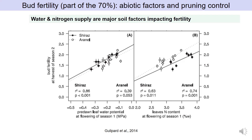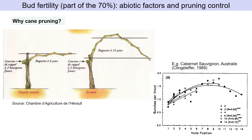What we call latent bud fertility is the number of primordia of inflorescences that will be differentiated within the latent bud. So why cane pruning? Cane pruning is used for varieties such as Ugni Blanc, for example, for which the basal latent buds — the bottom buds on the cane — are not fertile or are less fertile. You need to increase the number of buds per vine or per square meter to increase the yield by increasing the number of latent buds and thus the number of clusters per vine and per hectare.